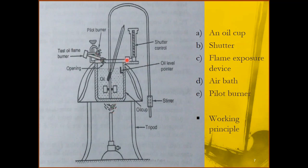In the closed cup method, the oil cup has a lid — this is clearly visible in the diagram. Fill the oil in the cup up to the oil level mark and cover it with the lid. The lid has 3 to 4 holes: one holds a stirrer with blades that move inside the cup to ensure continuous and uniform heating of the oil, and another holds a thermometer to monitor the temperature.